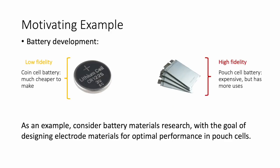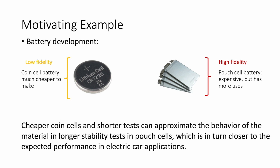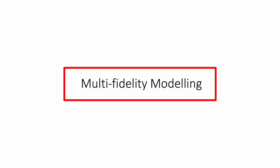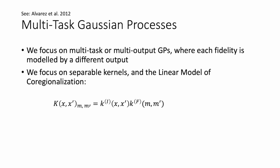The motivating example behind this research is battery development. In battery materials research, we usually have the goal of designing electrode materials for optimal performance in pouch cells. However, these experiments can be very expensive, so we can approximate their behavior using cheaper coin cells and shorter tests. To model this multi-fidelity setting, we will be using multi-task Gaussian processes.